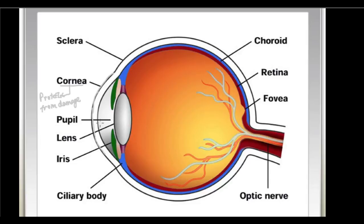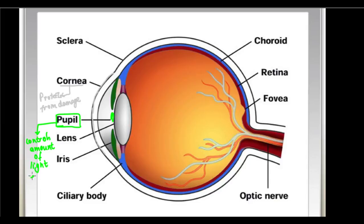There is a hole in the center, and this hole is what you call the pupil of the eye. This pupil controls the amount of light entering the eye. When there is an abundance of light, the pupil contracts — it becomes small to allow less light to enter — whereas if there is less light, the pupil expands to allow more light to enter the eye.